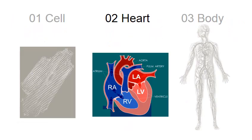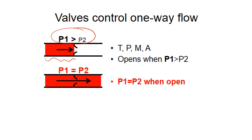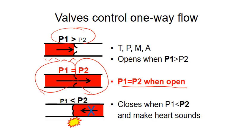In the whole heart, the valves are very important. If the pressure behind the valve is greater than the pressure in front of the valve, then the valve opens. What's important is when the valve opens, the two compartments become the same pressure. So P1 equals P2 whenever the valve is open. And once P2 becomes larger, there is closing of the valve which makes the lub or dub sound.